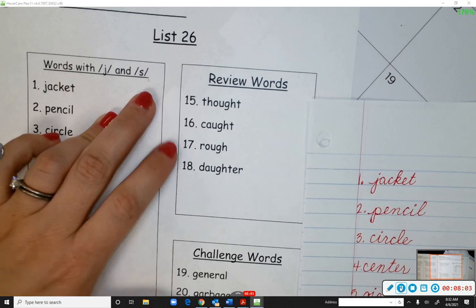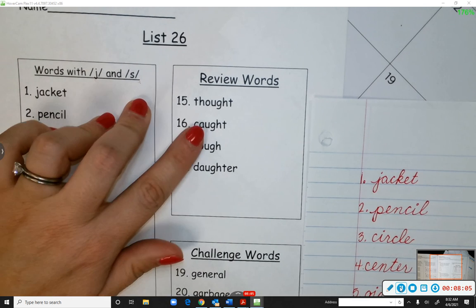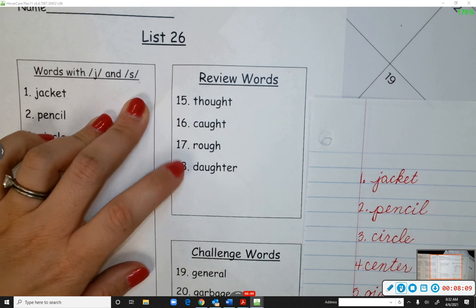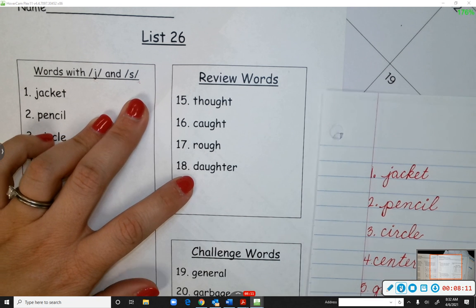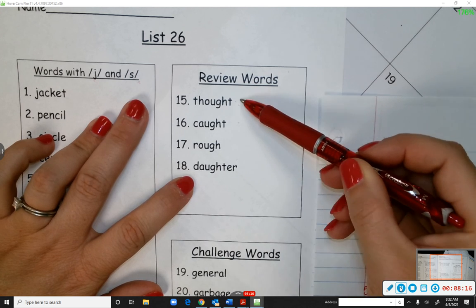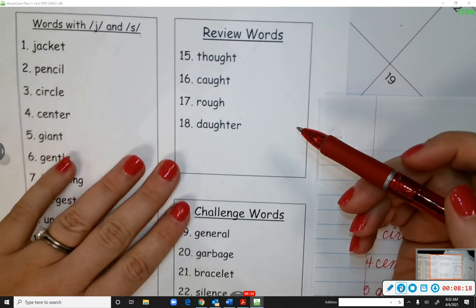Fifteen through eighteen are all review words. We have thought, caught, rough, and daughter. And we had some issues with this on our last spelling test, so make sure you study those words again if you missed them last time.